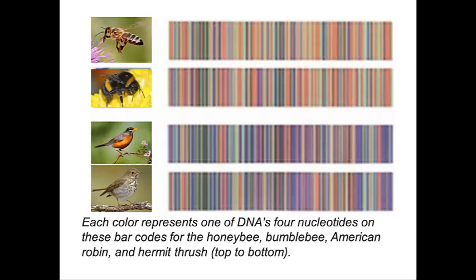The four species are the honeybee, the bumblebee, the American robin, and the hermit thrush. This is called Barcoding Life, and it is a project using the information from genome projects to identify and differentiate between species.